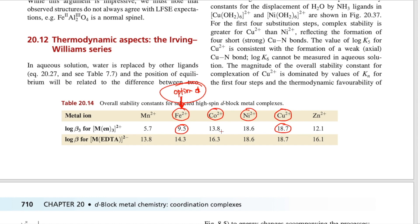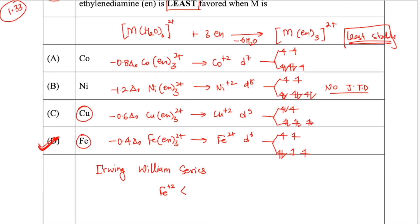I've given you the reference to show what the correct answer is and why the answer has been changed. Someone must have challenged this question, which led GATE to revise the answer key from option C to option D in the final answer key. I hope this is now clear and there should be no further confusion about this particular question. Thanks for watching — see you in the next one!